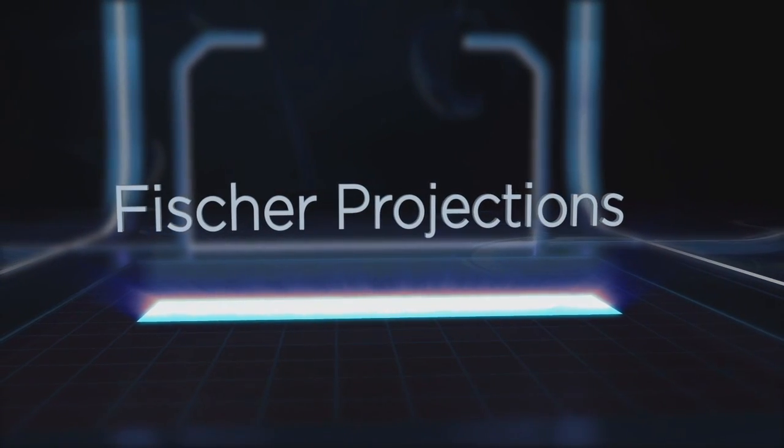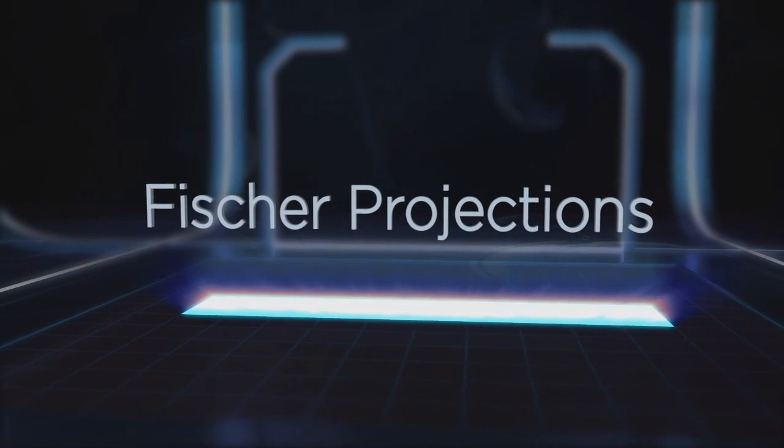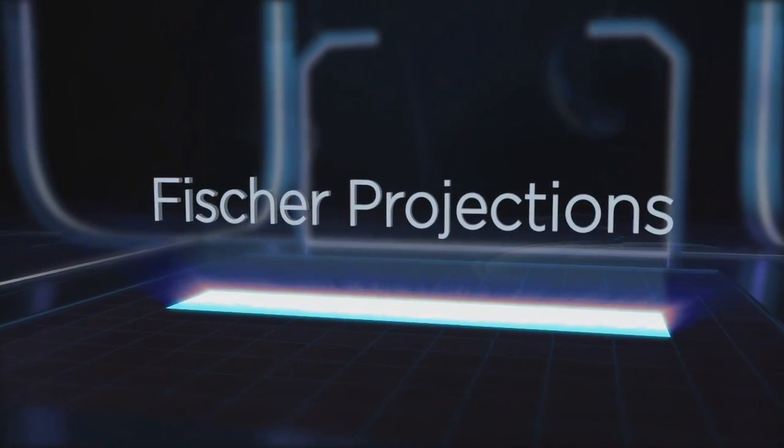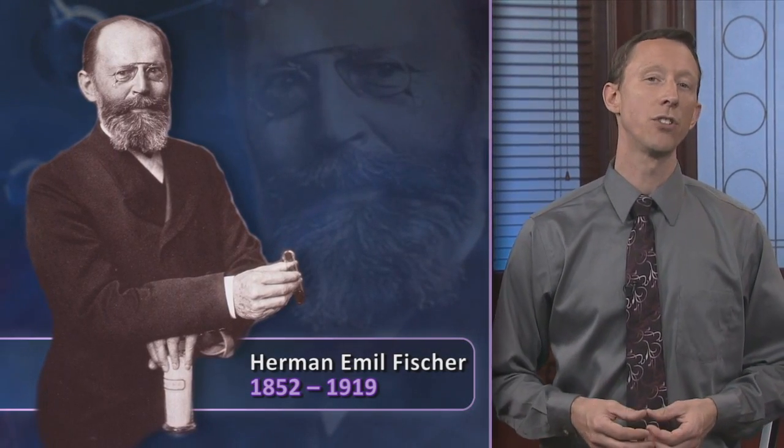Now, although perspective formulas are very useful for conveying the arrangements of atoms in small molecules, they can become unwieldy when larger chains of atoms are involved. So in 1891, Herman Emerald Fischer was dealing with just such a problem when he was researching carbohydrates.